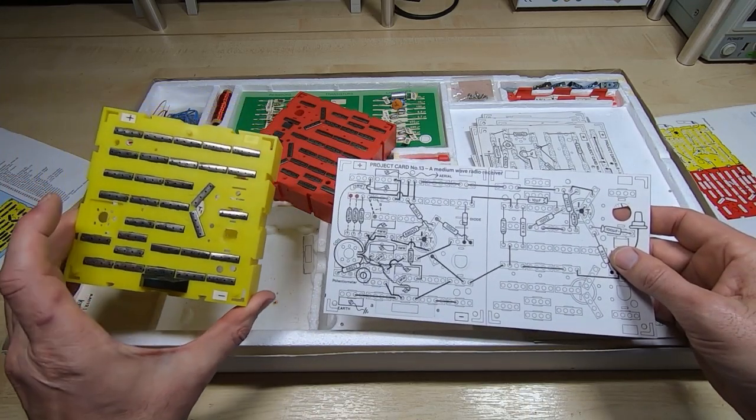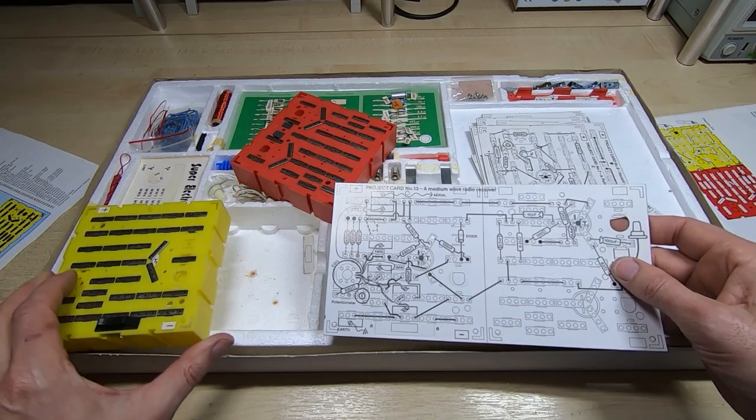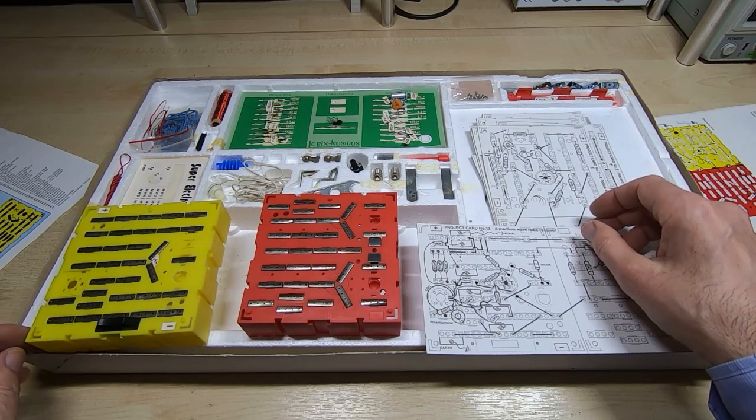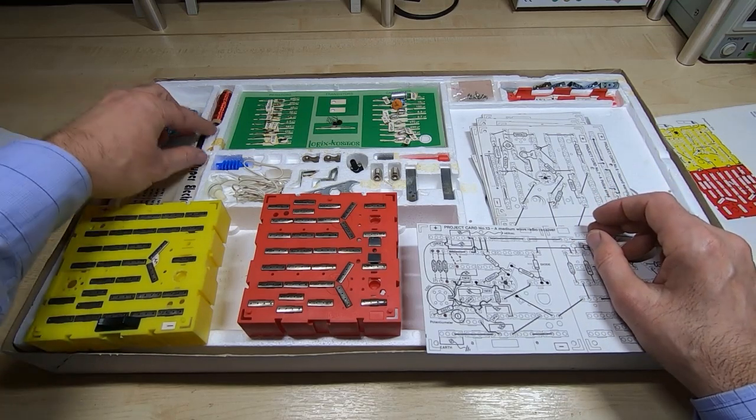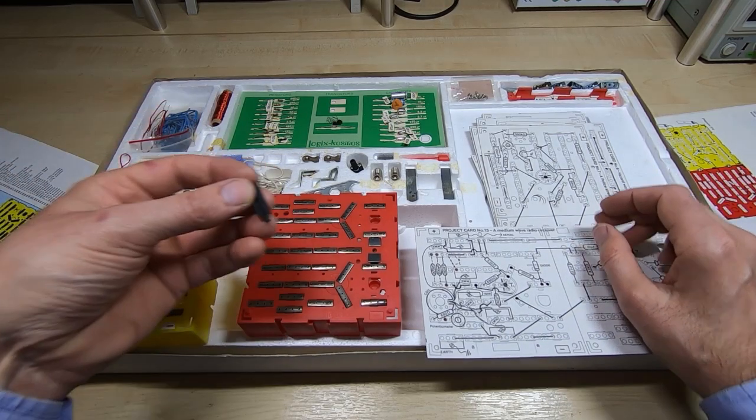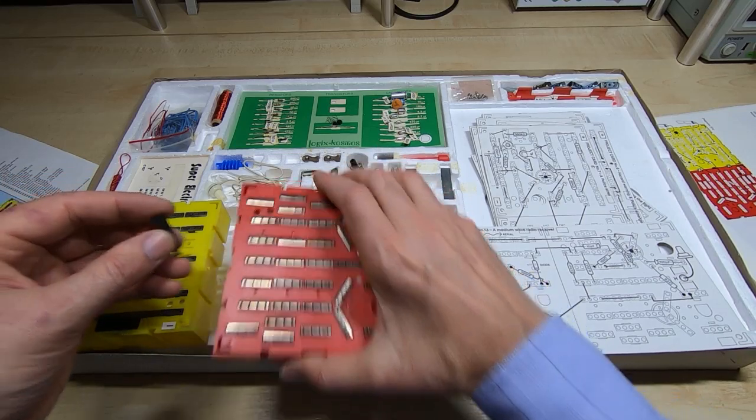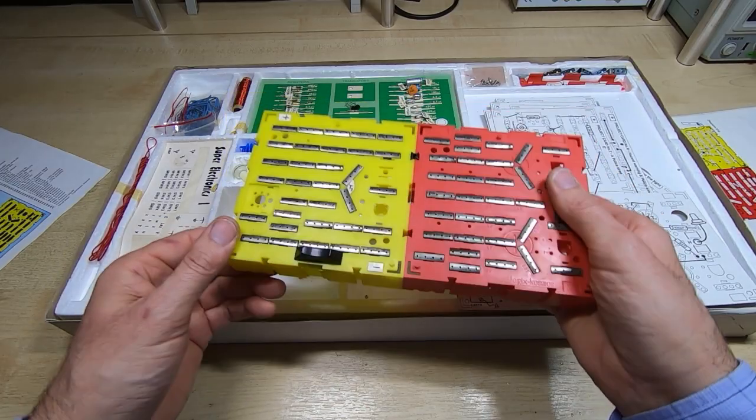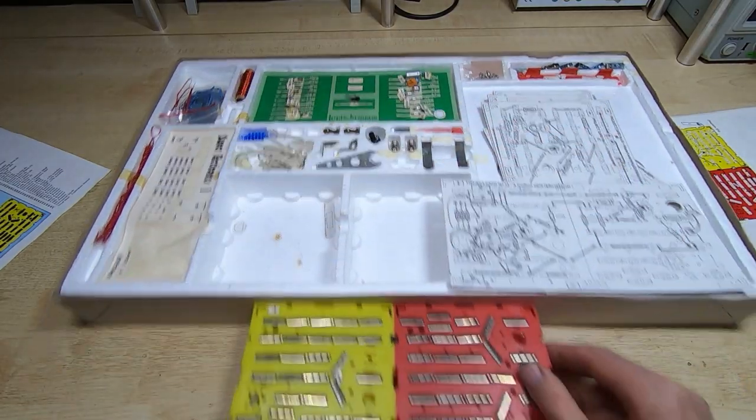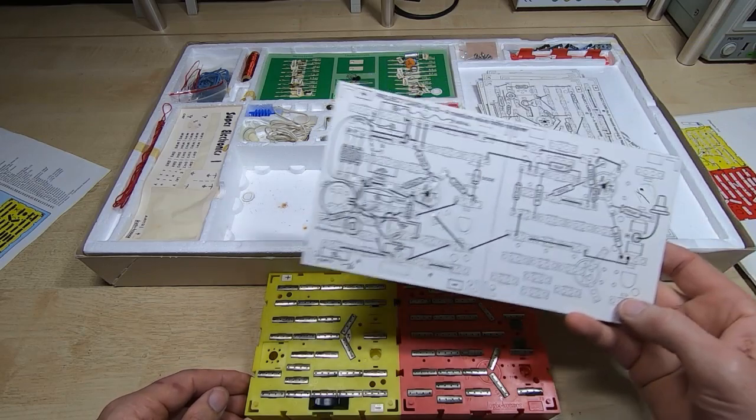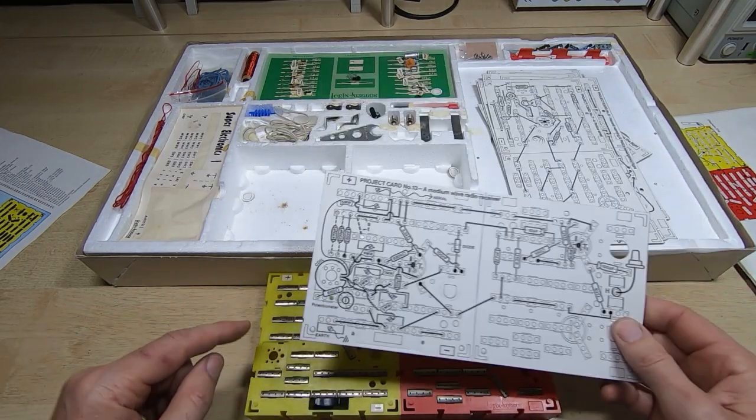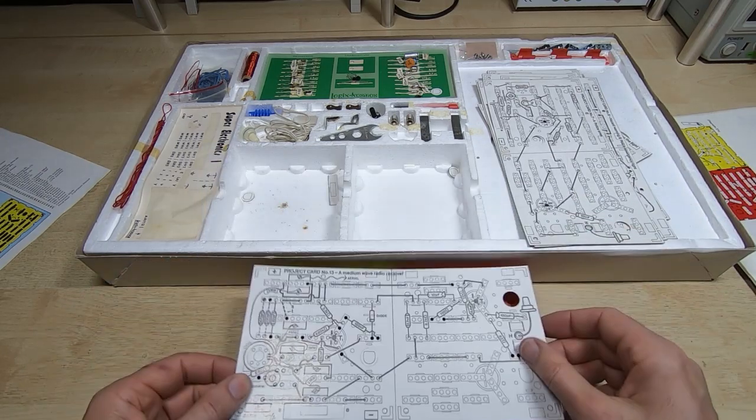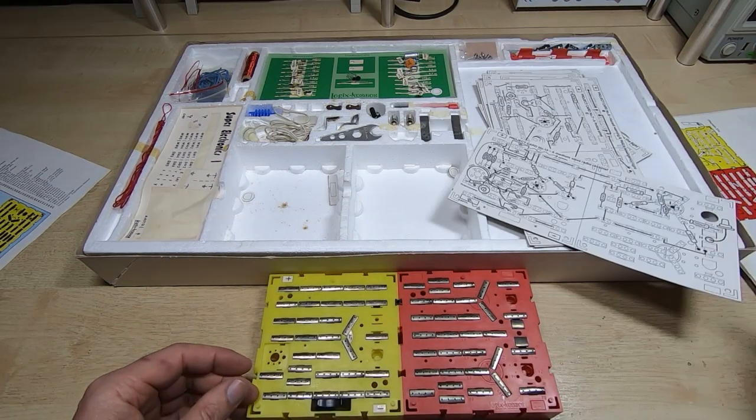We need to get the two breadboards assembled as shown here. So we have this one on the left, this one the other way around on the right, and then we should have a piece of plastic to join them. There should be two but one's missing, but one should be enough to hold them together if I'm careful. We can either put the card on top of the breadboard and put components through it, or use it as a reference.